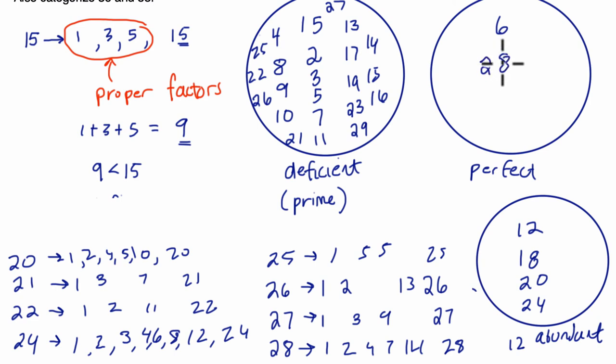29 is prime, and 30. The grand finale. 30. 1 times 30. We have 2 times 15, and 3 times 10, and 5 times 6. So 15 plus 10 is 25, plus 6 is 31, plus 5 is 36, and it's already bigger than 30, so it's going to be abundant. Another multiple of 6. So multiples of 6 seem to fit in this category. That's really interesting.